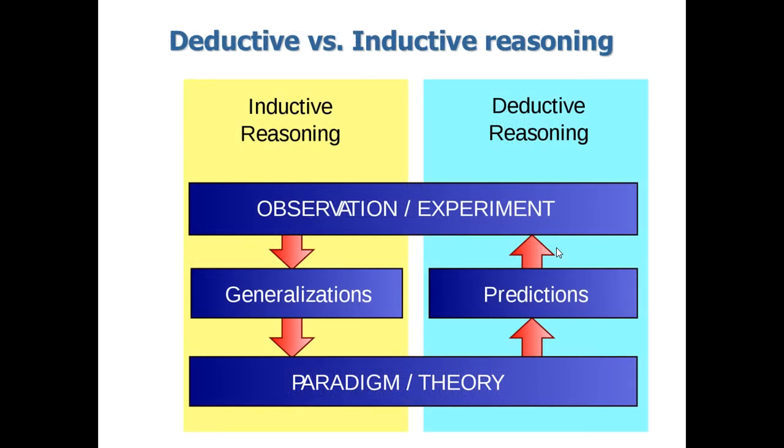Now, try to understand, there are two types of reasoning methods used whenever we are trying to develop a theory. One is inductive reasoning and then deductive reasoning. In inductive reasoning, we are starting with observation and then we are trying to conclude something about the relationship.